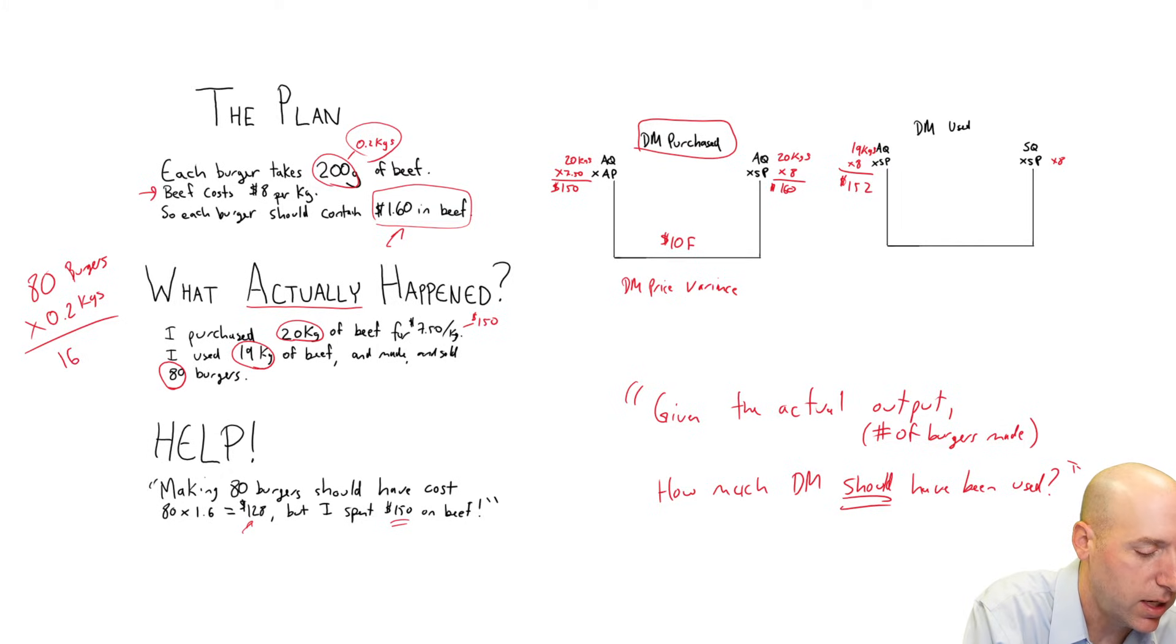We know our standard quantity was 200 grams per burger or 0.2 kilograms per burger. So given that I made 80 burgers and burgers are supposed to take 0.2 kilograms, it should have taken 80 times 0.2. That is 16 kilograms of beef. So 16 kilograms of beef times 8. 16 times 8, 128.